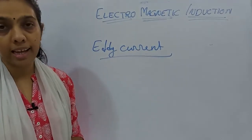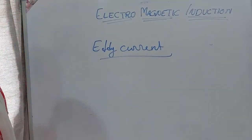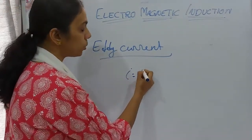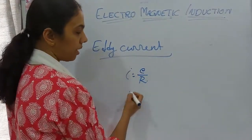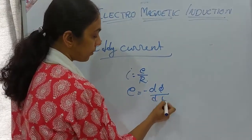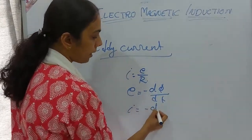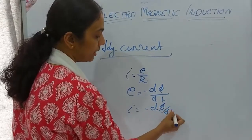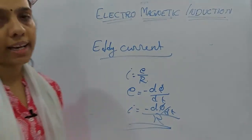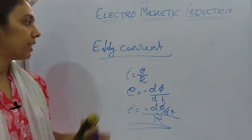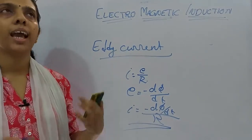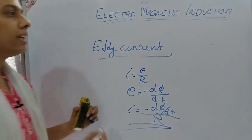The eddy current formula comes from I = E/R, and since E = −dΦ/dt, we get I = −(dΦ/dt)/R. The induced eddy current opposes the direction of change of flux.